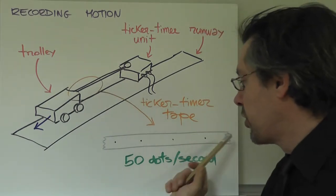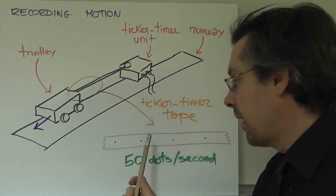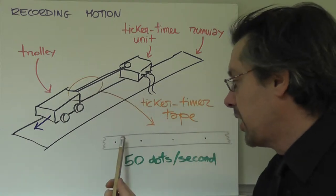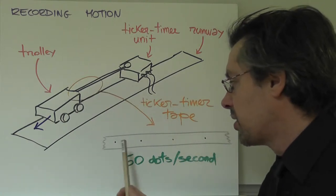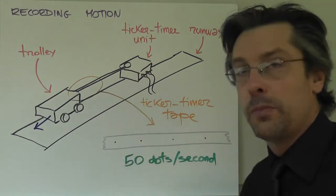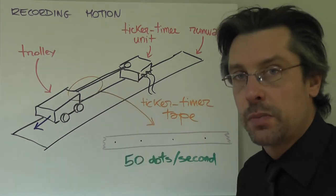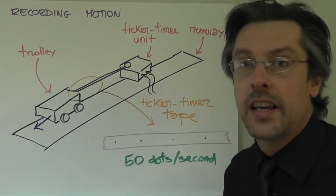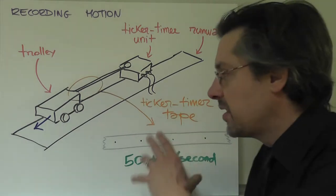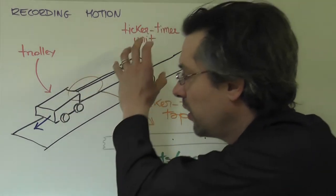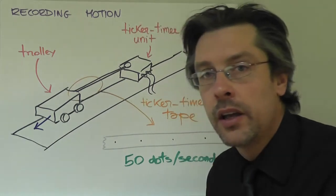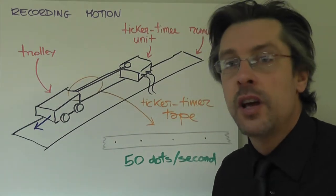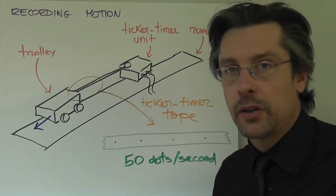Now this is an enlarged version of what you will have, so a piece of tape and a series of dots, and you know that this object does 50 dots per second. Let's see how we can use this tape attached to a trolley that moves down a runway to find information about the movement of a trolley.